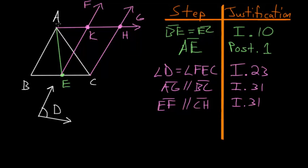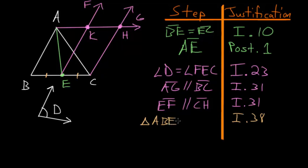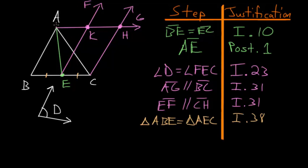Now let's focus on our original triangle. It has been cut into two triangles: ABE and AEC. These triangles have equal bases and share the same line parallel to their bases, so by Book 1, Proposition 38, triangle ABE equals triangle AEC. Since triangle ABC is cut in half, we can write that triangle ABC equals twice triangle AEC.